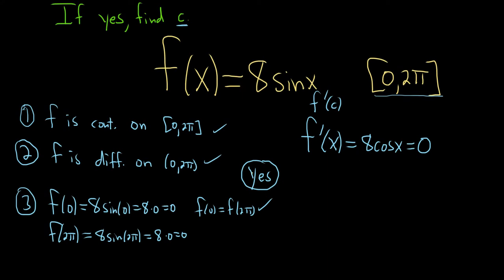All right, so we're looking for all answers between 0 and 2π where this is true. Let's divide by 8 just to make it a little bit cleaner. So this is cosine of x equals 0.